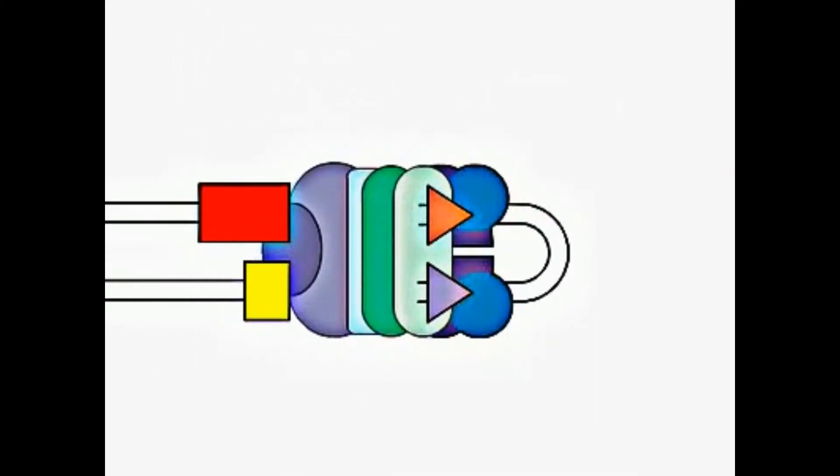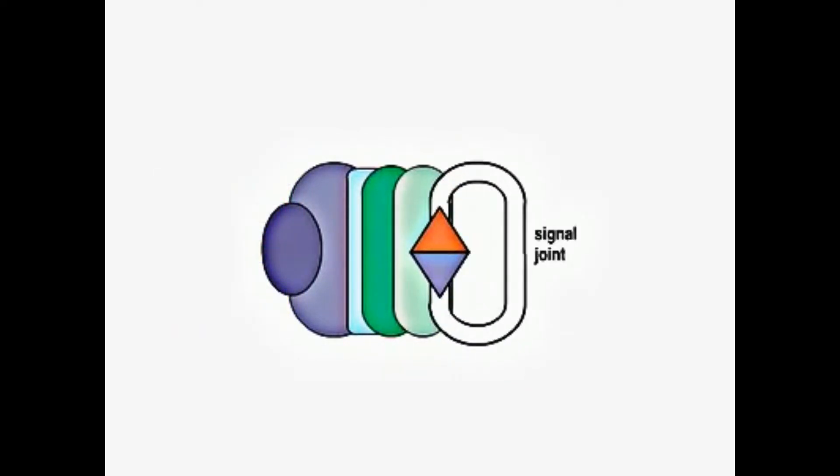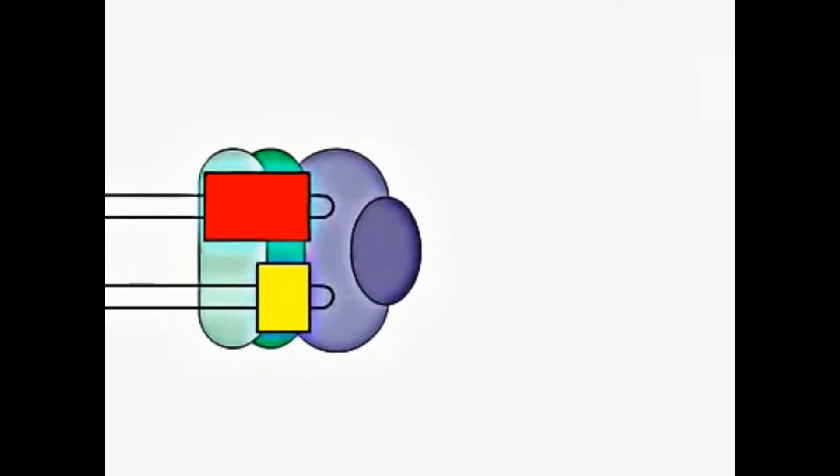These RSS ends are joined together and form a signal joint to create a closed circle of DNA, which is released and has no further role in the recombination process.